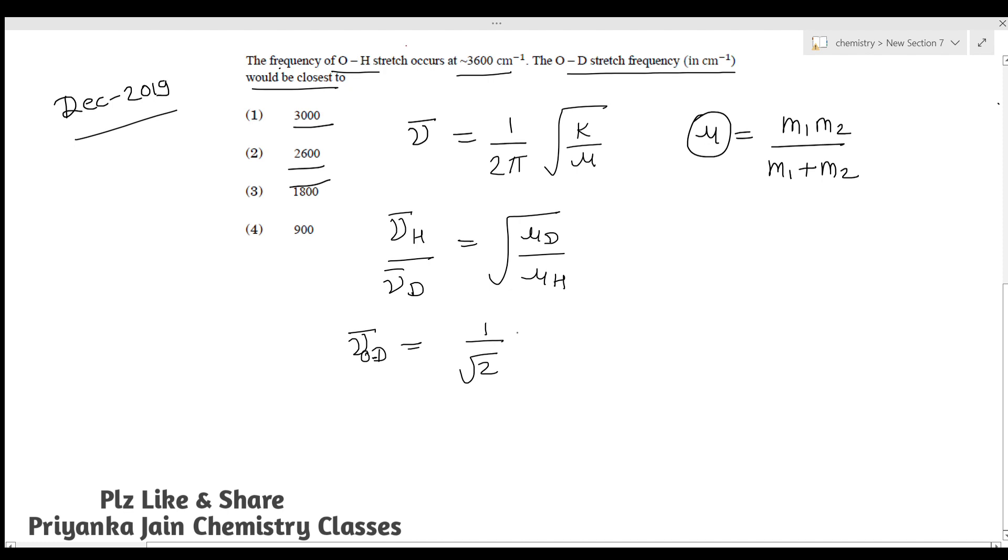Just put the value here. This will be 3600 / √2. Put the value of √2, which is 1.414: 3600 / 1.414 = approximately 2545 cm⁻¹. So this is how you solve such questions.